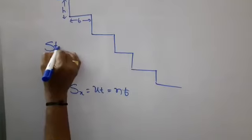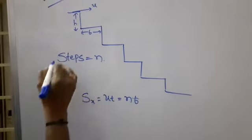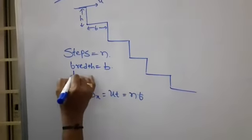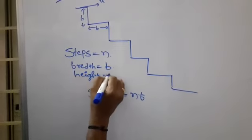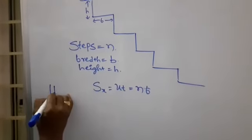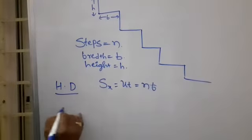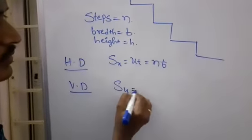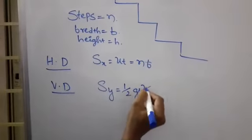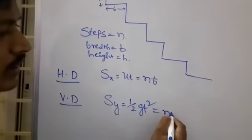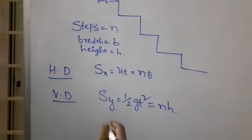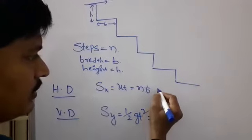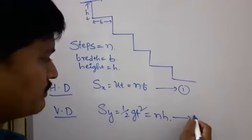There are N steps, each of breadth B and height H. The initial speed is U. The vertical displacement covered by the body — it behaves like a freely falling body — is Sy = half into G into T squared, which equals N into H. This gives us expression 1 and expression 2.